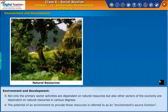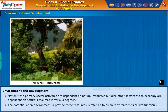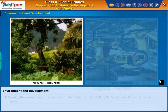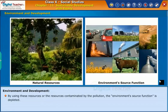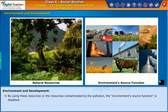The potential of an environment to provide these resources is referred to as an environment's source function. By using these resources, or when resources are contaminated by pollution, the environment's source function is depleted.